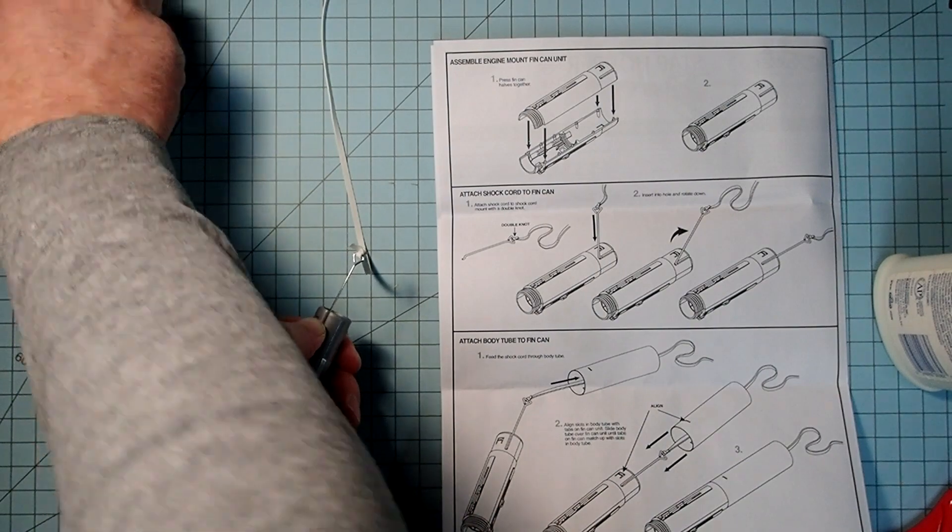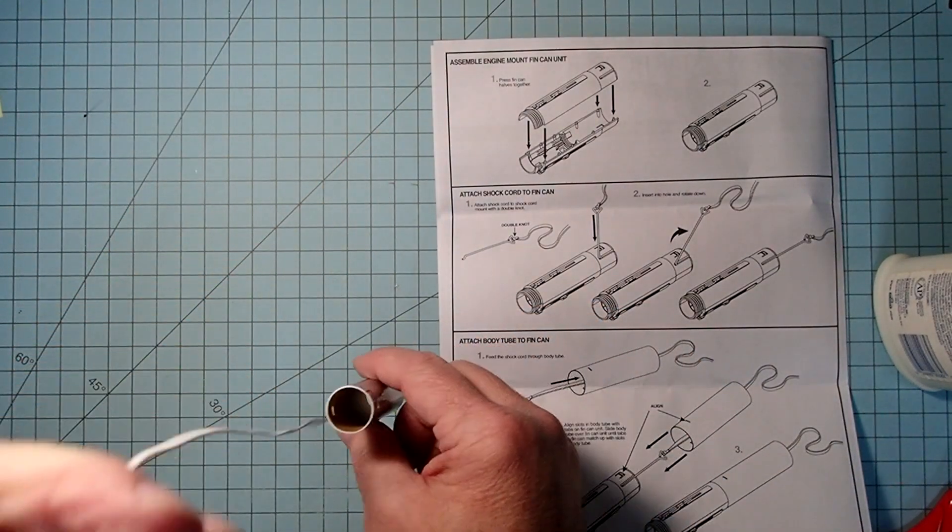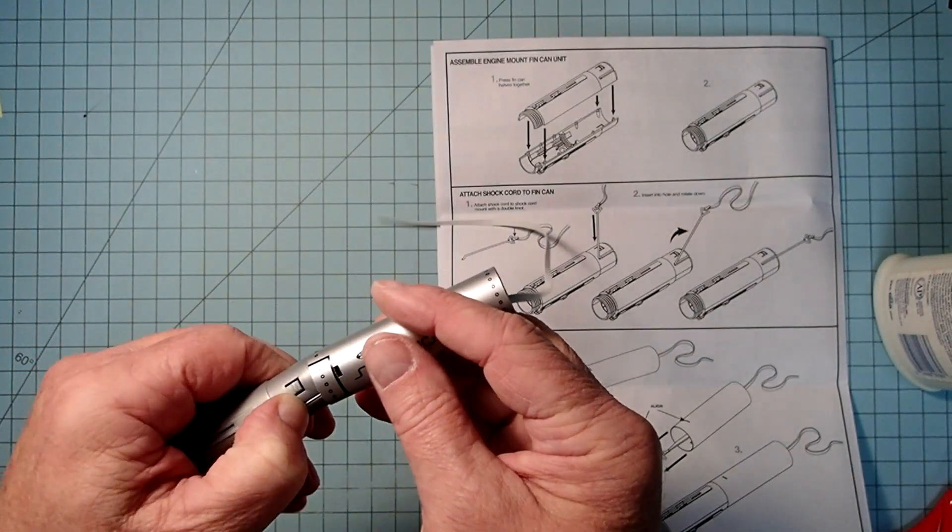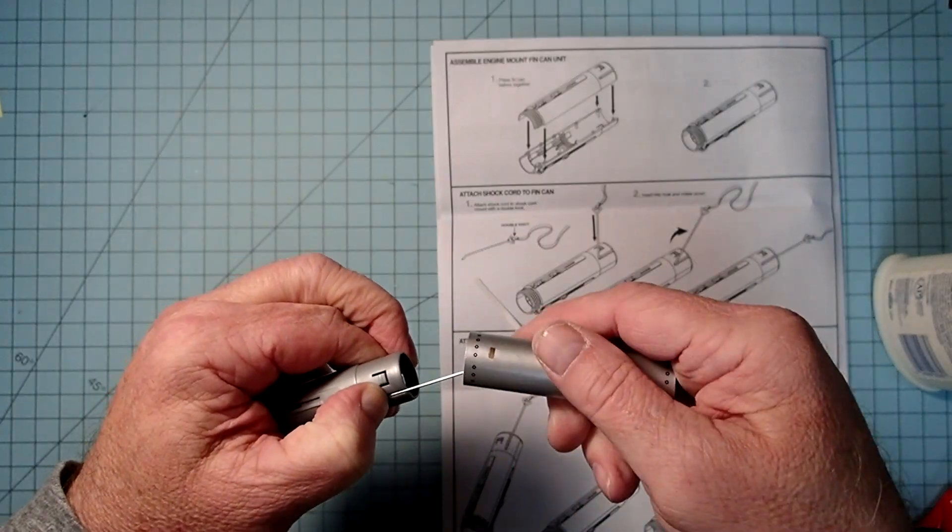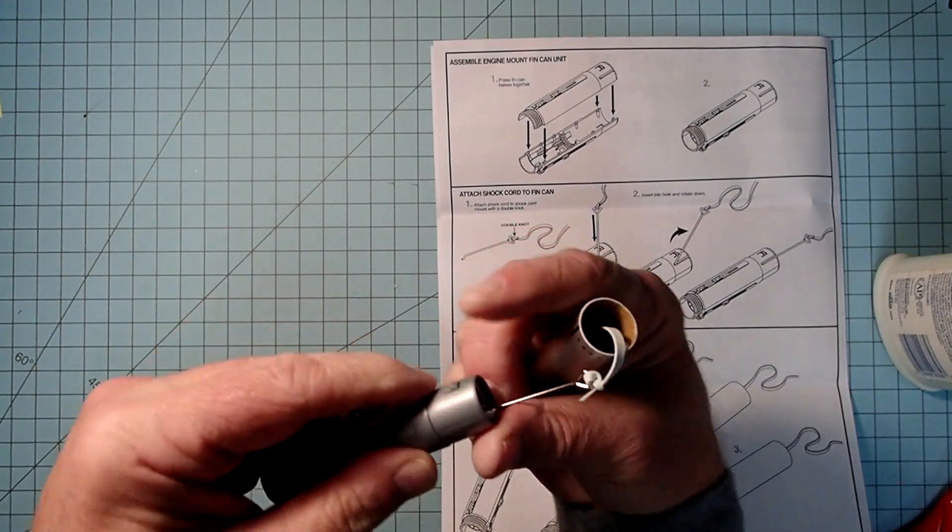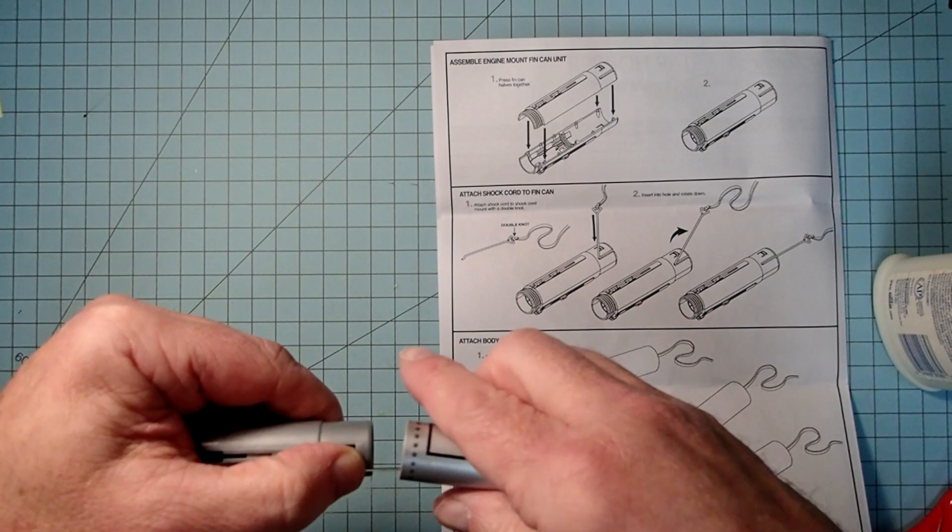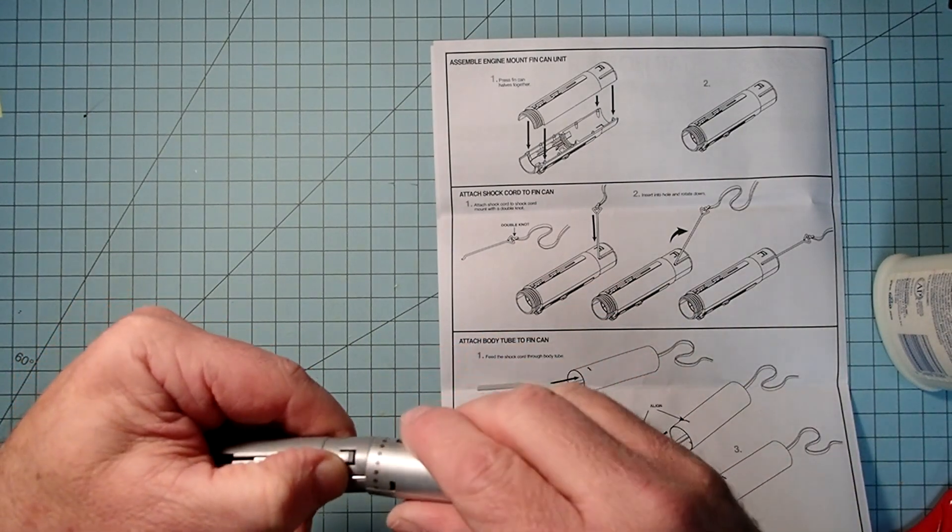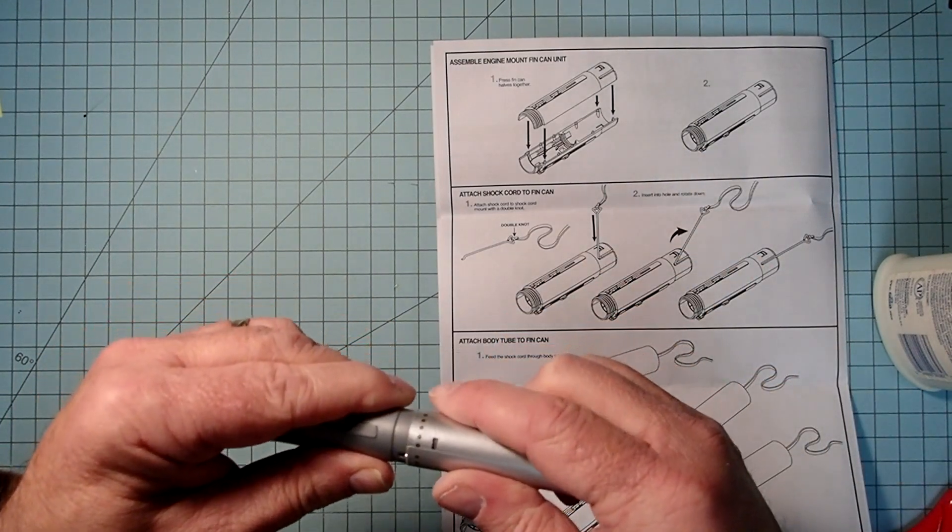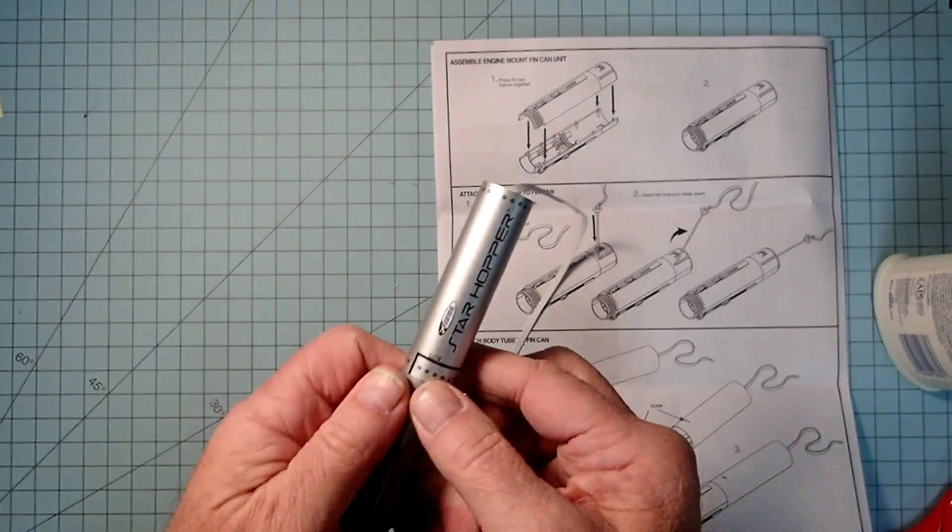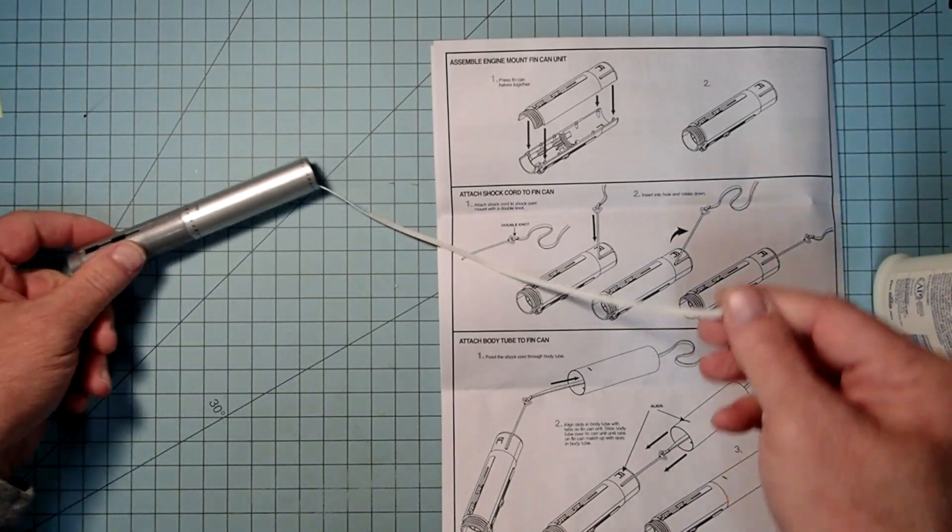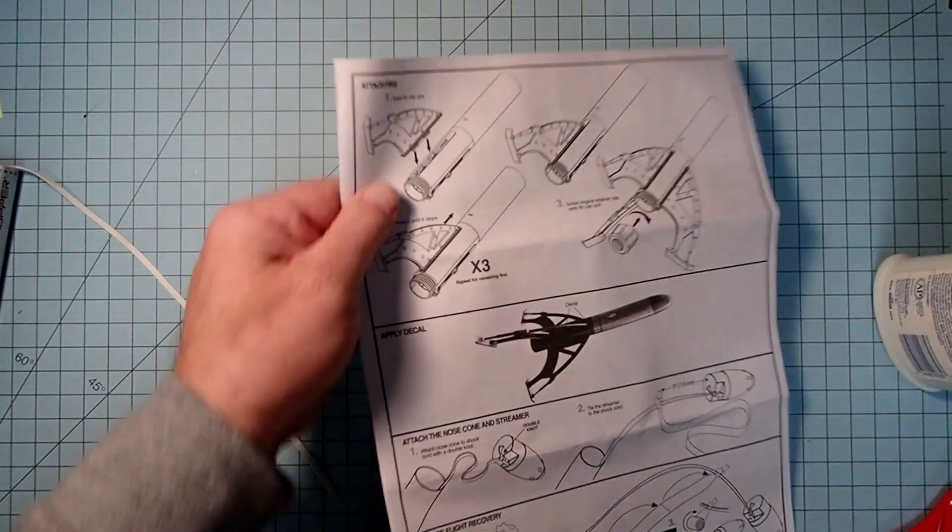Then we're going to take the body tube here and thread the remainder of the shock cord through that. There's two slots here, one there and another on the opposite side. Those are going to go over these little pegs, one on each side there. So I'm going to slide this over. It's the body tube that's going to lock the shock cord mount in place. And just push that in. The two tabs on the fin can should lock into those two slot holes.